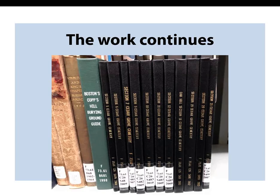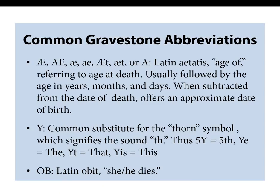Common gravestone abbreviations: AE, or Latin aetatis, means age of, referring to the age at death. You may also find the phrase in their 33rd year, which means the person was approaching 33 but had not yet reached it — so they were probably 32. You also see Y, which is a substitute for the thorn symbol signifying the th sound — thus ye meaning the, yit meaning that, and yis meaning this — commonly found in early 17th and 18th century gravestones but not in the 19th century. And obi, from Latin obit, means she or he died.